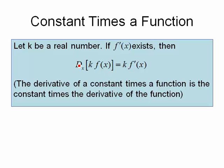what it says is if I take the derivative of k times a function, that's just equal to k times the derivative of that function. So what that essentially is telling me is that constants go right through derivatives.